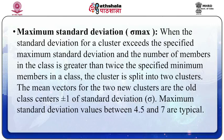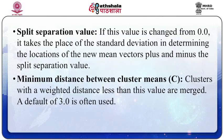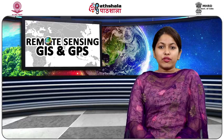Maximum standard deviation, sigma max: when the standard deviation for a cluster exceeds the specified maximum standard deviation and the number of members in the class is greater than twice the specified minimum members in a class, the cluster is split into two clusters. The mean vectors for the two new clusters are the old class centers plus or minus one standard deviation. Maximum standard deviation values between 4.5 and 7 are typical. Split separation value: if this value is changed from 0, it takes the place of the standard deviation in determining the location of the new mean vector, plus and minus the split separation value. Minimum distance between clusters: clusters with a weighted distance less than this value are merged; a default of 3 is often used, as shown in figure number 7. Hope you have enjoyed this lecture. Thank you.